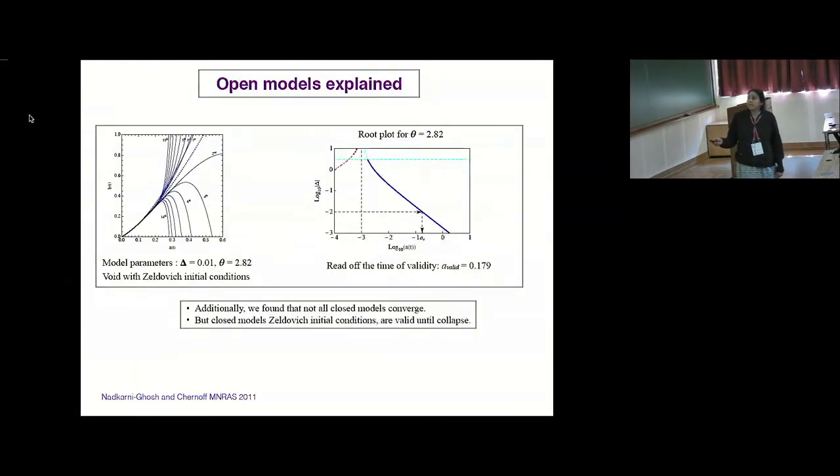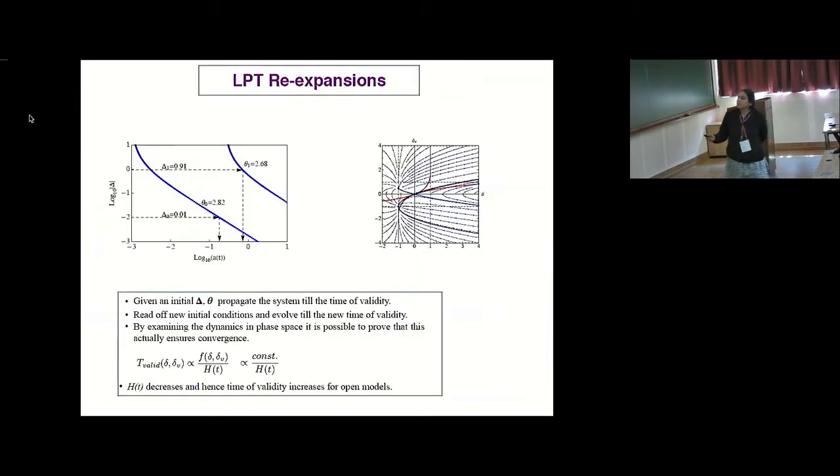So based on this we could explain the void model. So this is a case with model parameters delta of 0.01 and theta is 2.82. This corresponds to a void with Zeldovich initial velocities. And here from the root plot you can just read off the time of validity is a of 0.179, which is approximately what is observed. In addition to this, we found that not all closed models are convergent, but indeed the closed models which obey Zeldovich initial conditions are valid until collapse, which is why 1LPT and 2LPT work so well because of this, otherwise we would have seen signatures of that earlier.